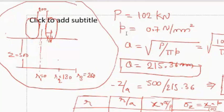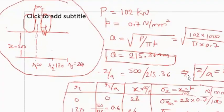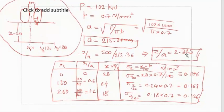From capital P and contact pressure you can find the small a, radius of contact area. You can find 215.36, Z by A you can find that is 2.32, and R by A.